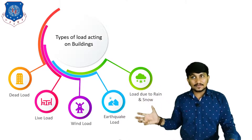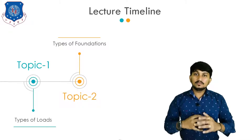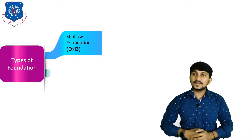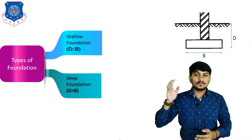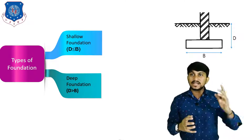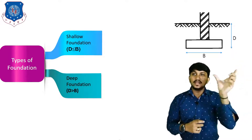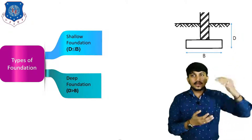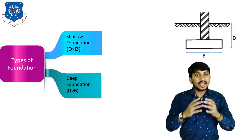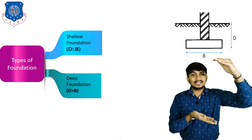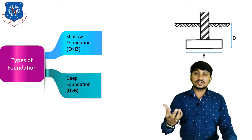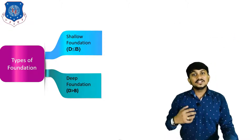That's all about types of loads acting on the building. Now we will move to our second topic: types of foundation. Foundations are classified into two broad categories: shallow foundation and deep foundation. As shown in this figure, d is the depth of the foundation and B is the width of the foundation. If the depth of the foundation is more than the width, it is called a deep foundation. If depth is equal to or less than the width, it is called a shallow foundation.